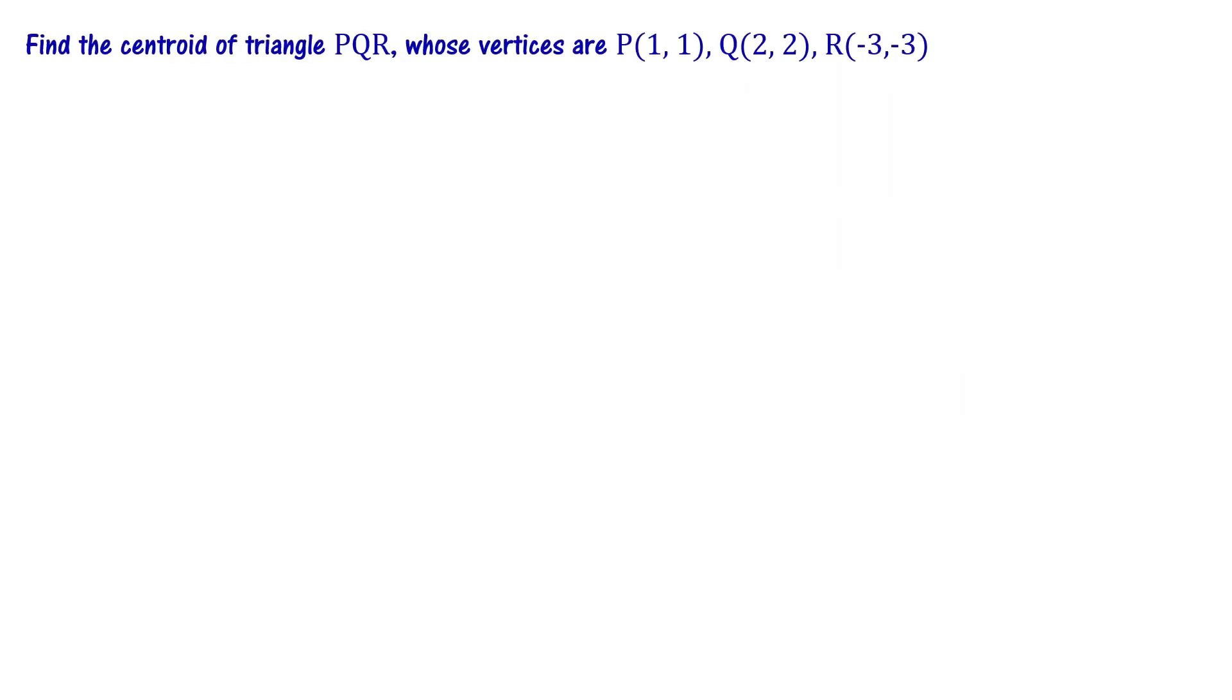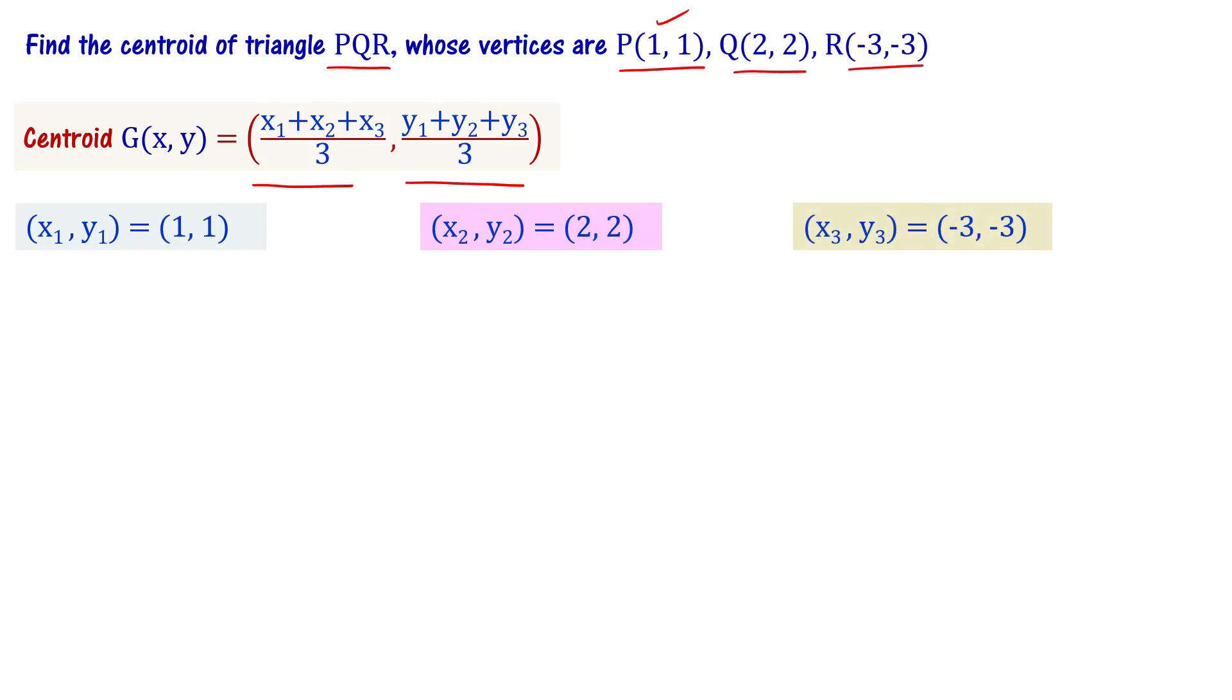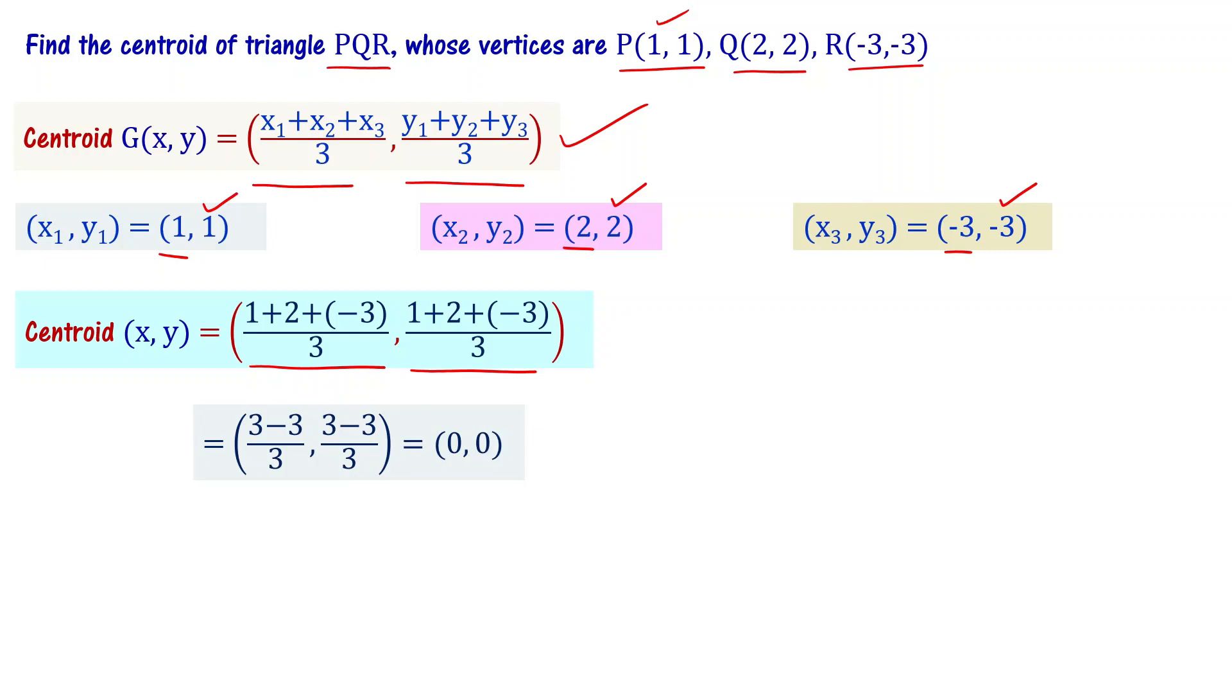Let us solve this problem: Find the centroid of triangle PQR whose vertices are (1,1), (2,2), and (-3,-3). Using the centroid formula: ((x1 + x2 + x3)/3, (y1 + y2 + y3)/3). We substitute: ((1 + 2 + (-3))/3, (1 + 2 + (-3))/3), which equals ((3 - 3)/3, (3 - 3)/3), which equals (0/3, 0/3), so we get (0, 0). The centroid of triangle PQR is (0, 0).